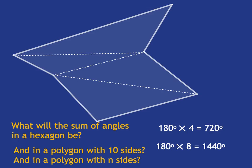And so the sum of its interior angles will be 180 times eight. And of course, then n sides, if a polygon has n sides, its interior angles will add up to 180 multiplied by n minus two.